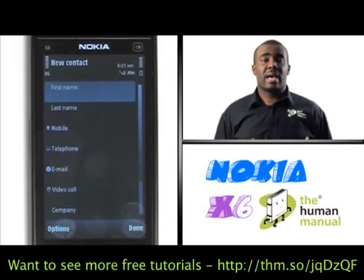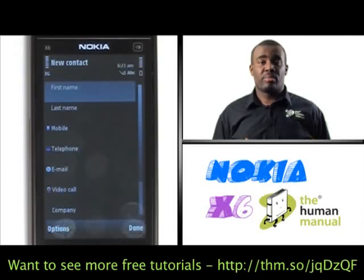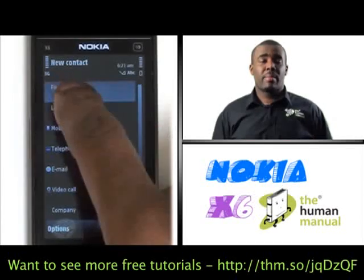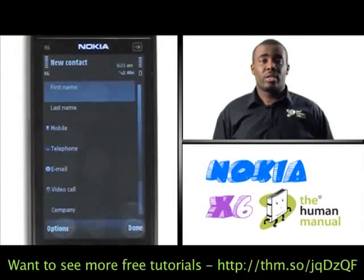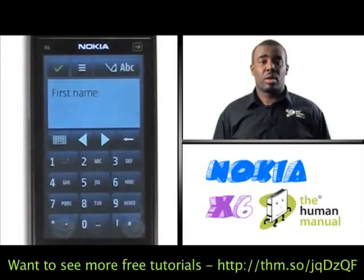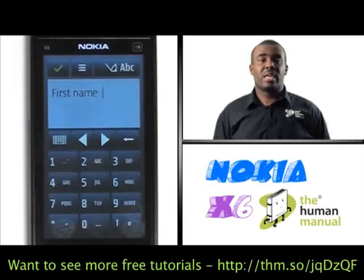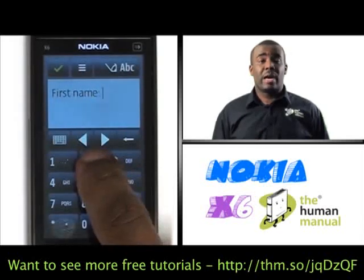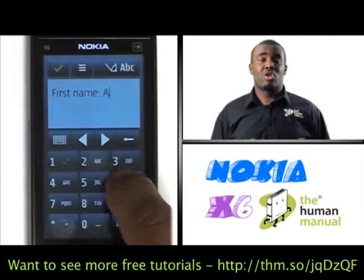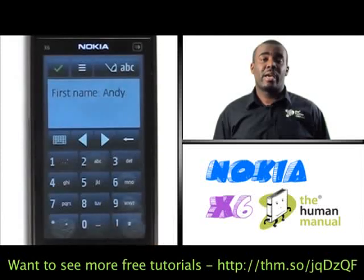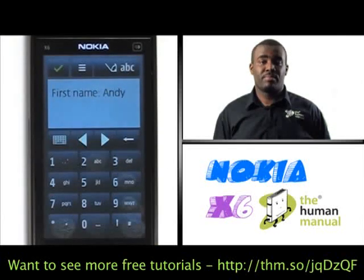Now you'll be given access to add more information about your contact. Double tap the field called First Name and this will bring up a keypad for you to type in your contact's first name. Once you've entered your contact's first name, press the green tick icon found at the top left of the screen.